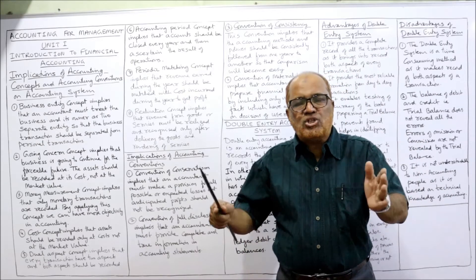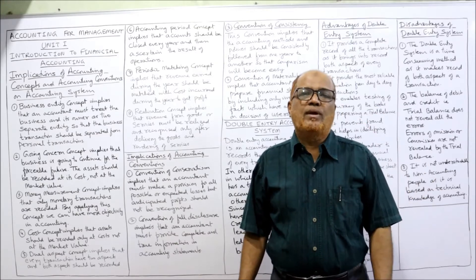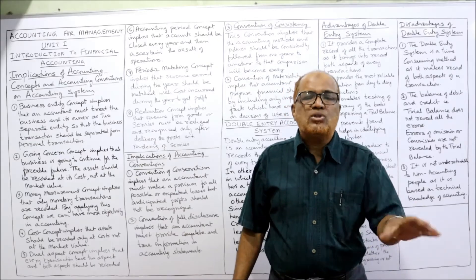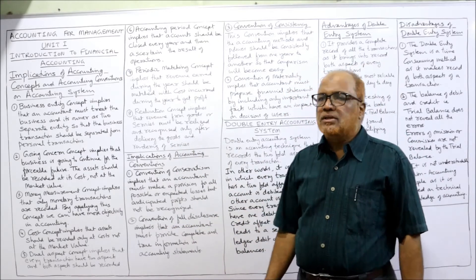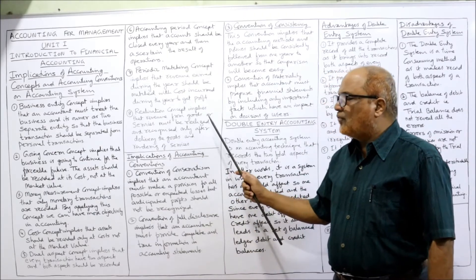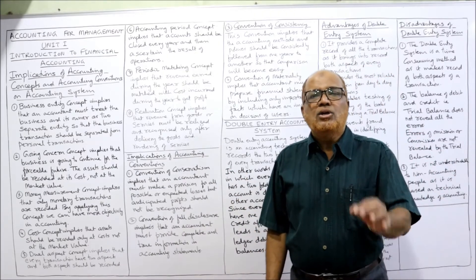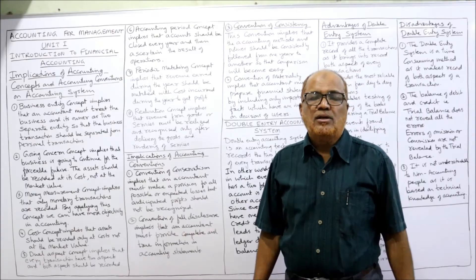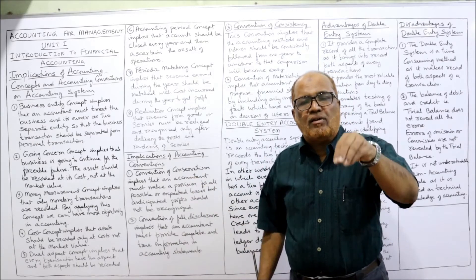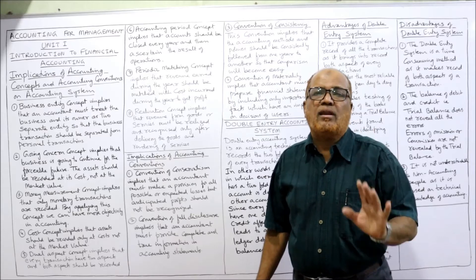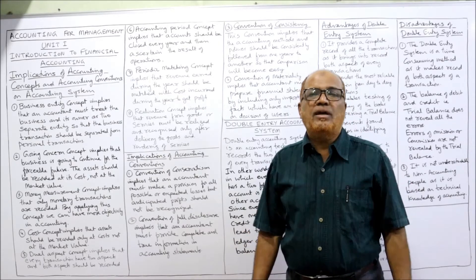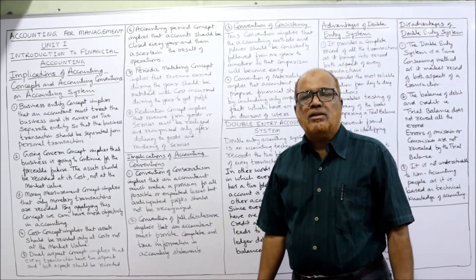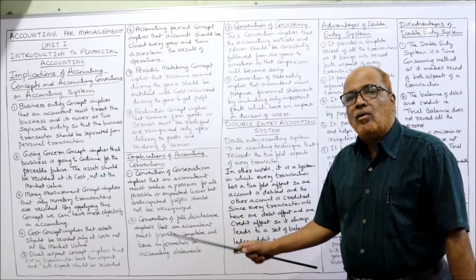When we match revenue with cost, we can get the profit — that is the implication of following the periodic matching concept. The realization concept implies that revenue from goods or services should be recognized when the goods are delivered or services are provided. Only when goods are delivered or services are provided will revenue be recorded; otherwise, revenue should not be recognized. These are the implications of accounting concepts.